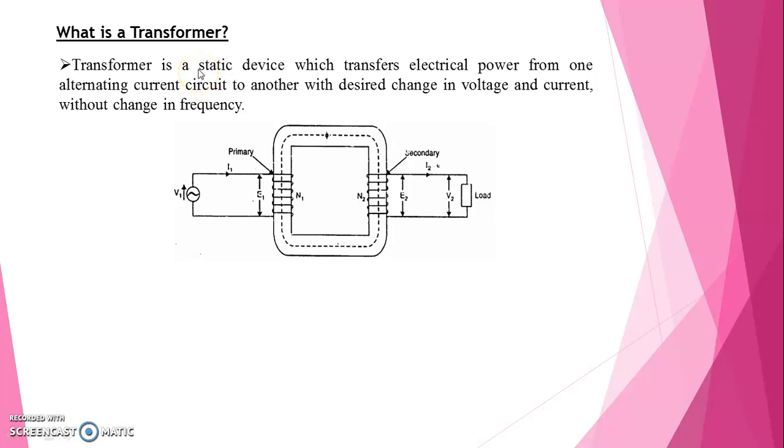Here transformer is a static device. That means there is no movable part or rotating parts in this transformer. And we transfer electric power from one alternating current to another alternating current circuit. That means transfer of electric power happening from primary coil to secondary coil.